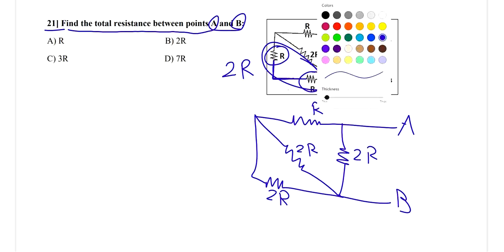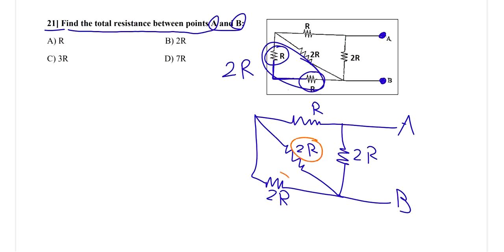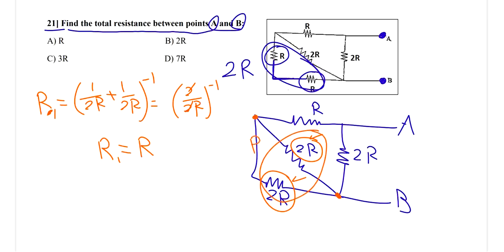Now, I want you to pay attention to these two. This one and this one. They start at the same point. They finish with the line at the same point. So this and this are connected in parallel. So let's find the equivalent of them. R equivalent, let me call it R1. R1 equals 1 by 2R plus 1 by 2R, negative 1. It's going to be 2 by 2R negative 1. So R1 will be only R. When you cancel 2 with 2 and you flip the 1 by R, it's going to be R. So the total of these is going to be R.